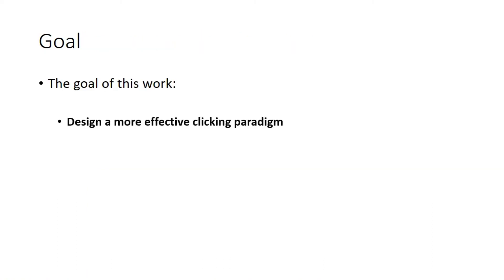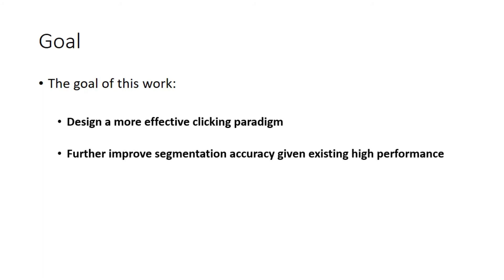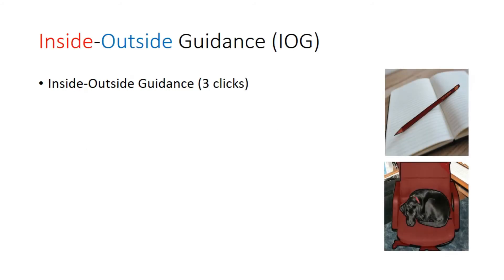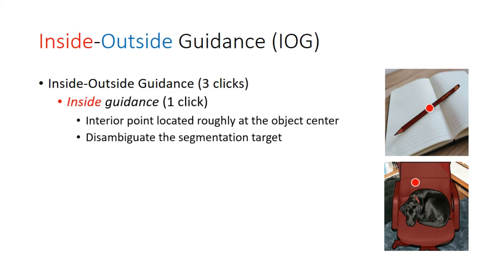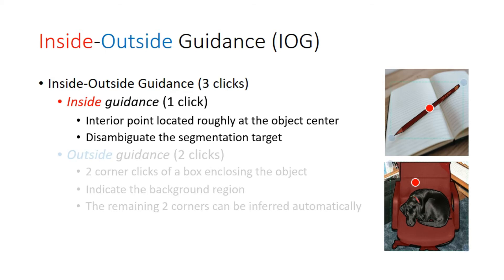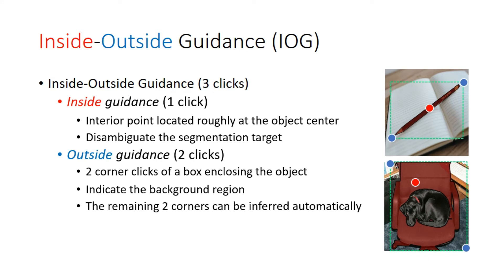Our goal in this paper is to design a more effective clicking paradigm to further improve segmentation accuracy. To this end, we propose a new form of interaction called Inside Outside Guidance, which consists of three clicks. The inside guidance is formulated as an object click located roughly at the object center, acting as a foreground click. The outside guidance is formulated by the two symmetrical corners of the bounding box enclosing the object, from which we automatically infer the remaining two corners as background clicks.